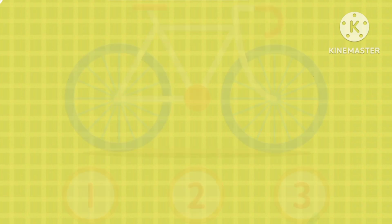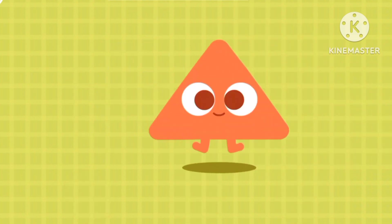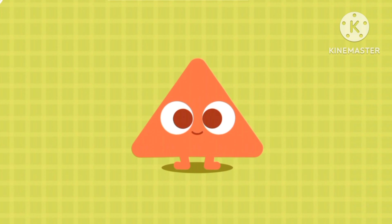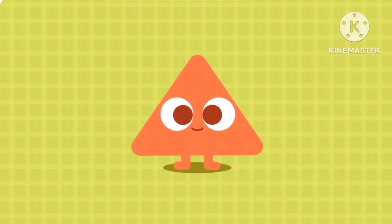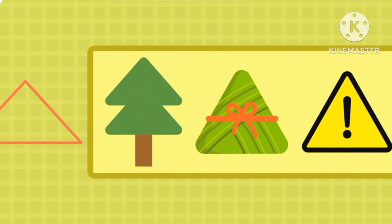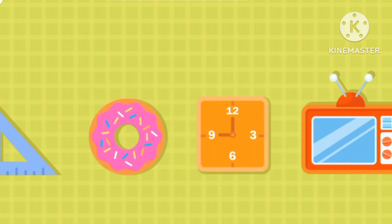How many circles are there? There are three circles. This is a triangle. These are the triangle shapes. Can you find a triangle?